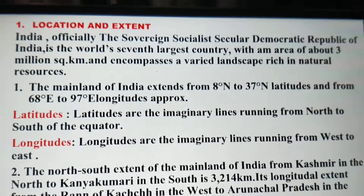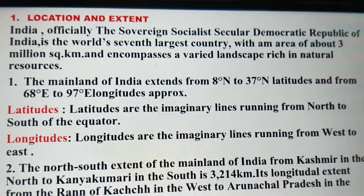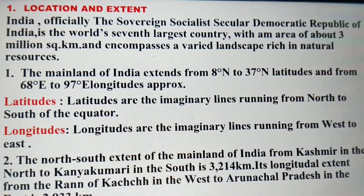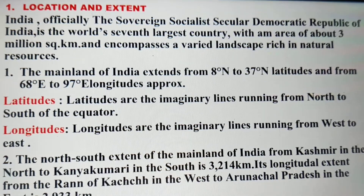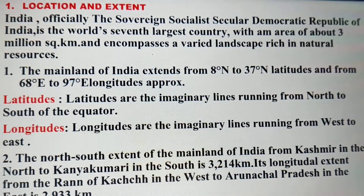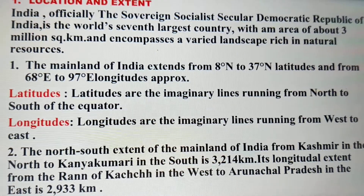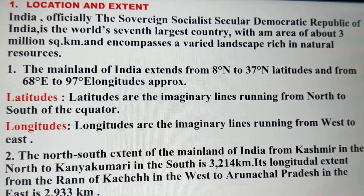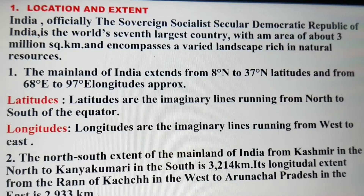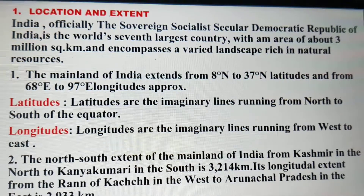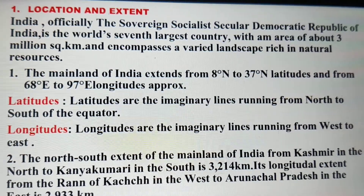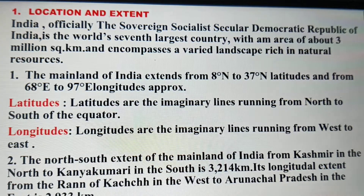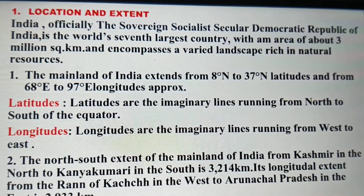Let me clarify the exact definitions of latitudes and longitudes. Latitudes are the imaginary lines running from north to south of the equator. Longitudes are the imaginary lines which are running from west to east.